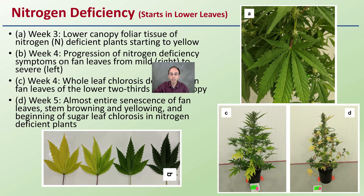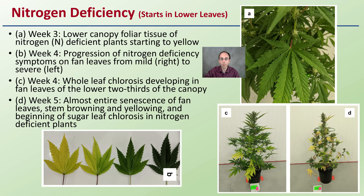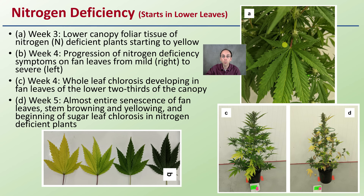Starting with nitrogen deficiency: at week three in the lower canopy, plants are starting to yellow. It might be a little hard to see, but there's a lightening of the green, and this will typically start in the lower leaves.